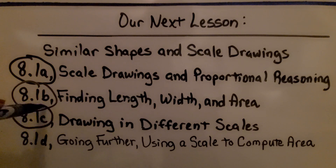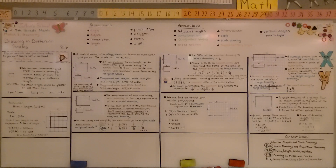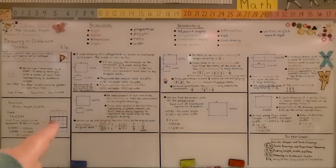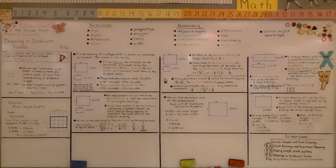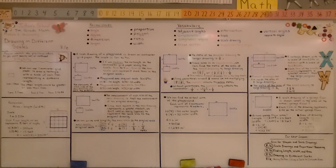We're finished with 8.1c. We're going to the last part of the lesson in the going further section, using a scale to compute area. If you're confused about simplifying the new scale to the original scale, go back and watch how we divided by one-eighth, multiplying by the reciprocal eight over one. If you're confused about finding the ratio of the area, remember to put parentheses around the entire fraction so the exponent affects the entire ratio. Have a great day and join me for the last part of the lesson.